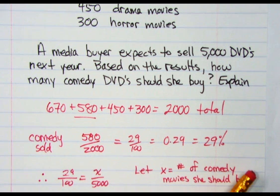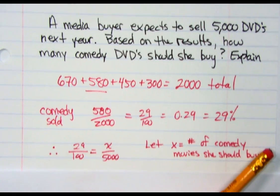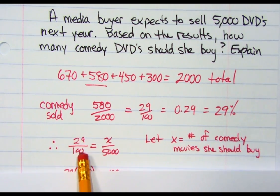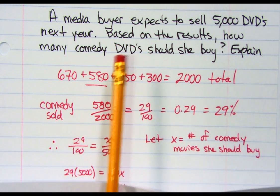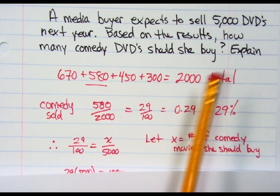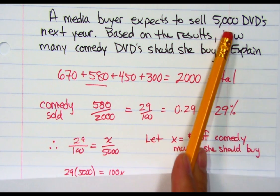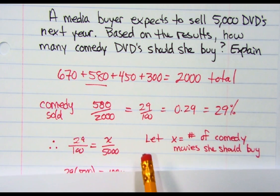Based on that, therefore I can use that information and say that's what we did this year, 29%. If the buyer expects to sell 5,000, which is a lot more than we sold last time, how many of those are going to be comedy? Can we expect to be comedy?